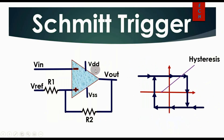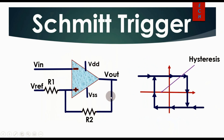This is the Schmitt trigger circuit. You can see here an operational amplifier is connected with positive feedback. We will understand the role of positive feedback.